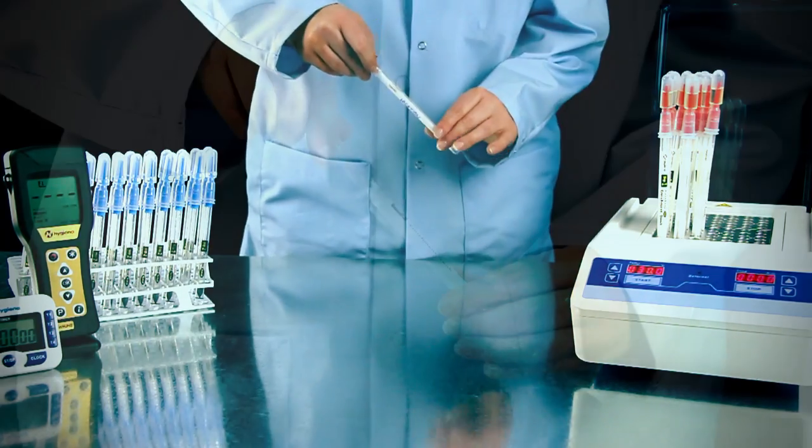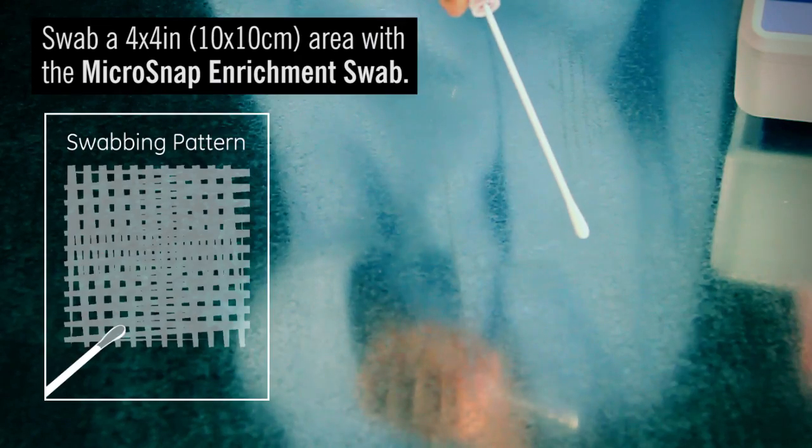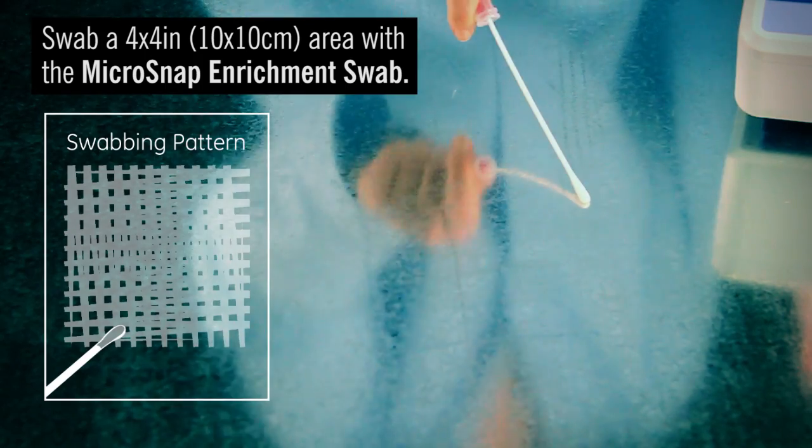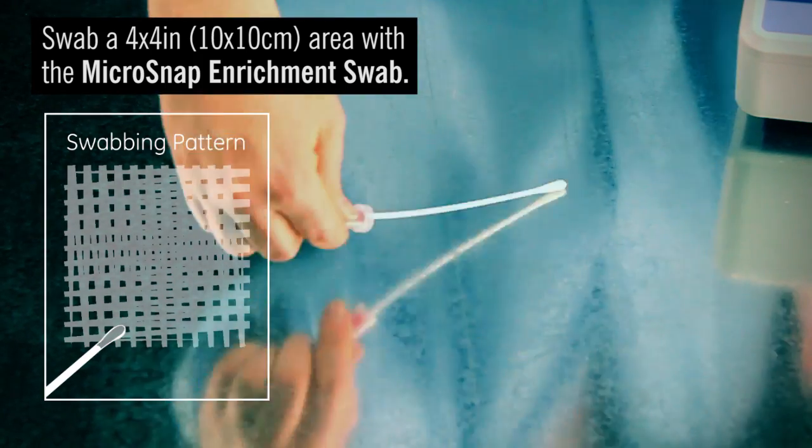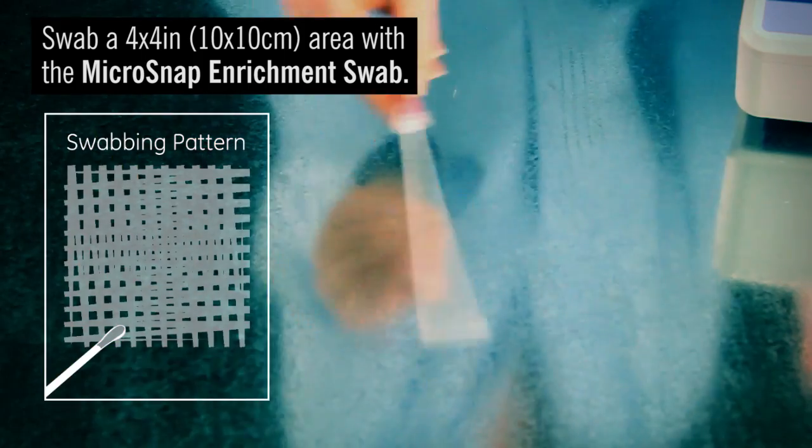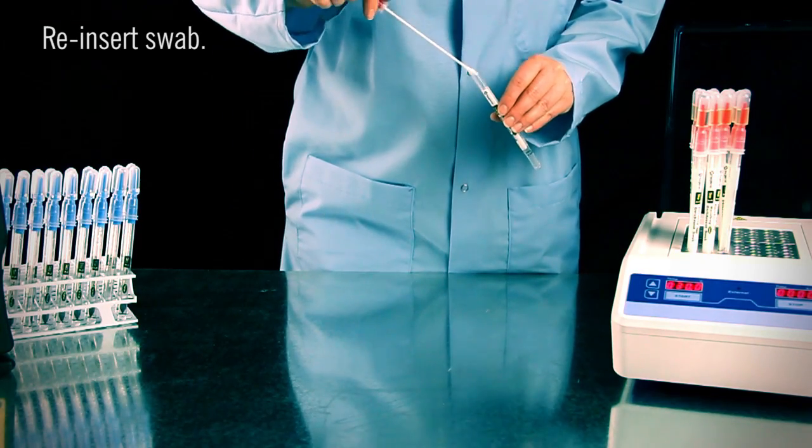Remove the swab from the enrichment device. Swab a 4x4 inch square area, applying sufficient pressure to create flex in the swab shaft and rotating to collect sample on all sides of the swab tip. Replace the swab in the tube.